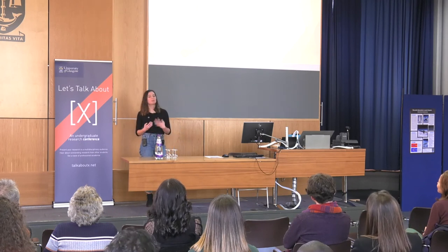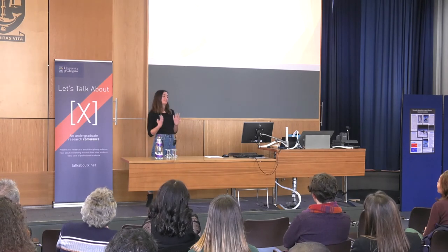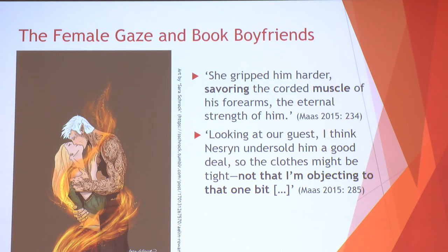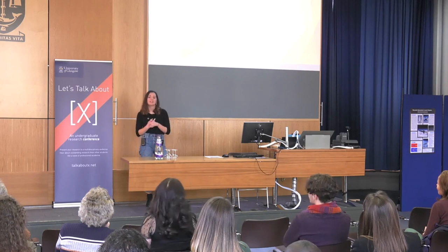Within the books we see this clearly. When Aelin is interacting with Rowan, it says: 'She gripped him harder, savoring the corded muscle of his forearms, the eternal strength of him.' So the male characters are described from a female perspective — the women looking at and appreciating the males' bodies. Then another female character, Lissandra, who hasn't yet met Rowan, says: 'Looking at our guest, I think Nazarene undersold him a good deal... the clothes might be tight — not that I'm objecting to that one bit.' She's looking at Rowan appreciating his body, while he remains silent and is simply gazed at by the female characters.